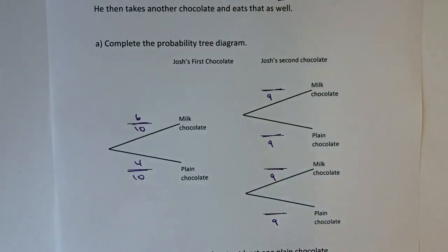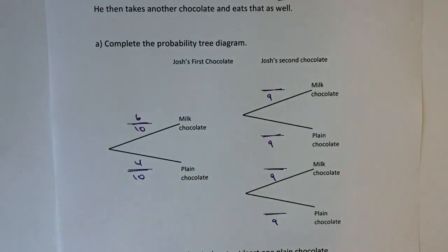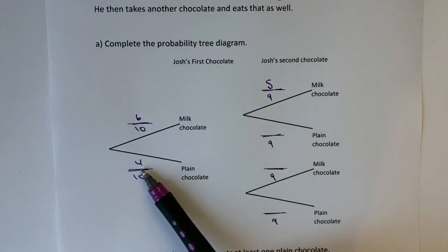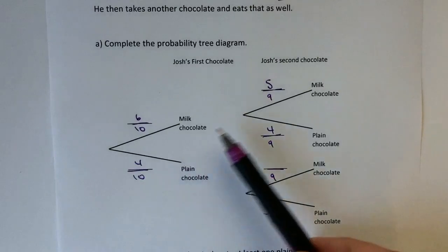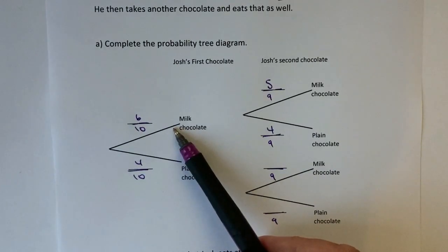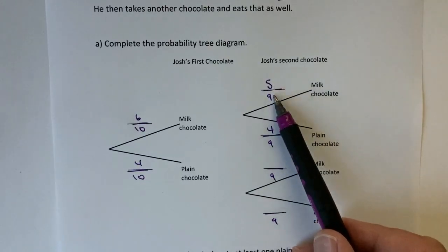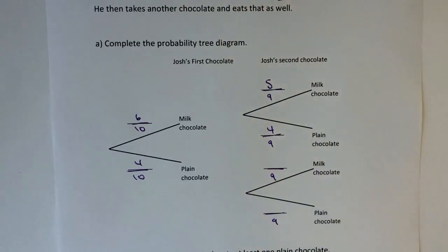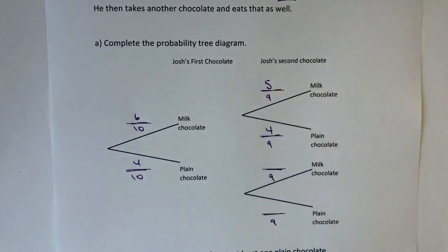Well, if he has a milk chocolate the first time round, there were six milk chocolates in the box but now there's actually only five. So there's a five out of nine chance that he's going to have another milk chocolate. However, there's still four plain chocolates left in the box. So this particular second outcome — as a result of eating a milk chocolate the first time round — is going to be five out of nine for milk, and there are only nine chocolates in the box because he's eaten one of them.